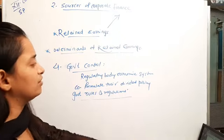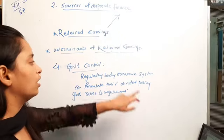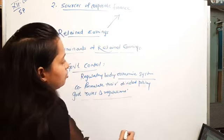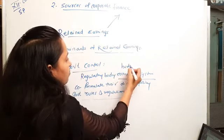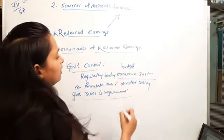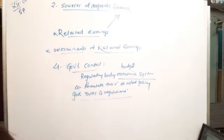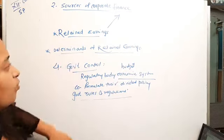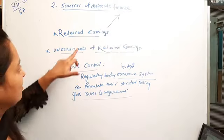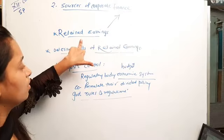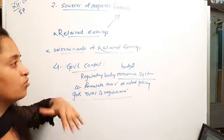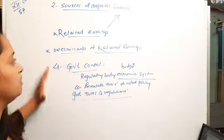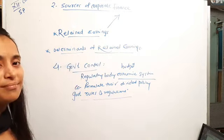We have to form a dividend policy because if the government does not get taxes, the whole economic system or the budget will be affected. That's it for today. We have seen retained earnings, how we retain earnings, and some advantages and disadvantages. Thank you.